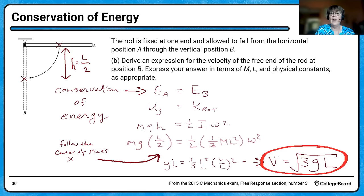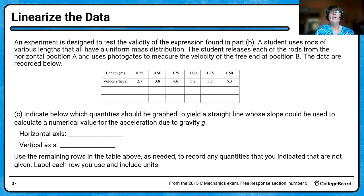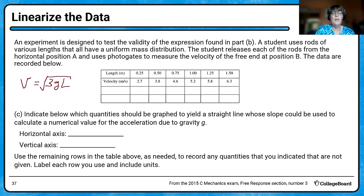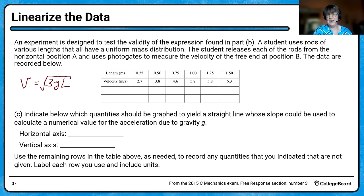Now let's do an experiment. We set up an experiment with rods of different lengths and used photogates to measure the velocity of the free end at position B. This was the expected velocity. Now they want you to linearize this data. Looking at V and the square root of 3GL — if I plotted that I'd get something parabolic and I wouldn't know how to determine G from it. So I'm going to turn the equation into a straight line and linearize the data.